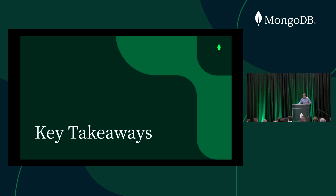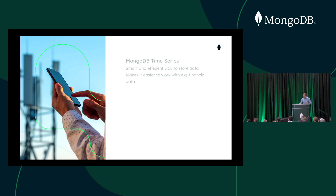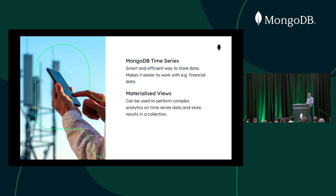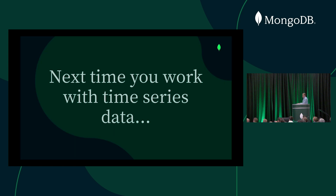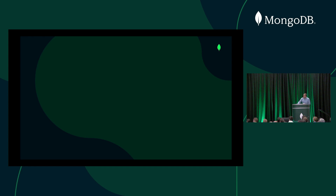Key takeaways: first, MongoDB time series is the smart and efficient way to store data like this, and it makes it way easier for any developer to work with financial data or any time series data. Combining it with materialized views lets you run fairly complex analytics — way more complex than just moving averages. And using database triggers, we can make sure our data remains fresh and materialized views always have the most recent version of the data. The most important takeaway: next time you work with any time series data, use MongoDB.